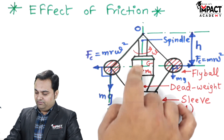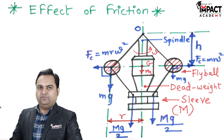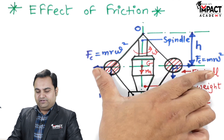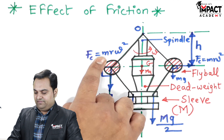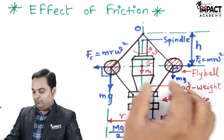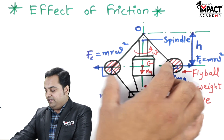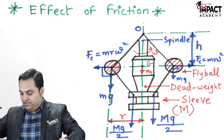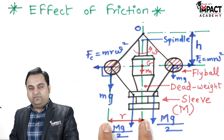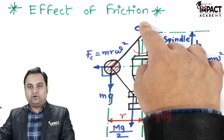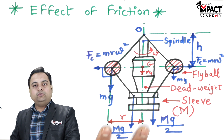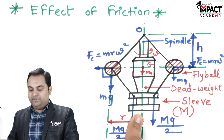Since the spindle is rotating at high speed, if the speed of the engine increases, the centrifugal force moves away from the center — it is m·r·ω² from one fly ball and similarly from the other. When centrifugal force acts outward, the fly balls move away, lifting the sleeve up, and the radius of rotation increases. This radius is the distance from the center of the spindle to the center of the fly ball, and we get different radii for different speeds.